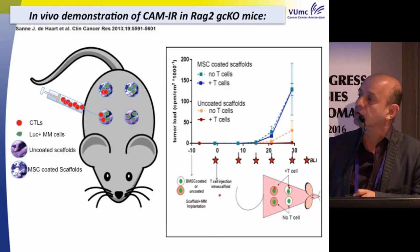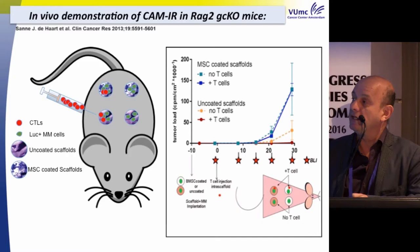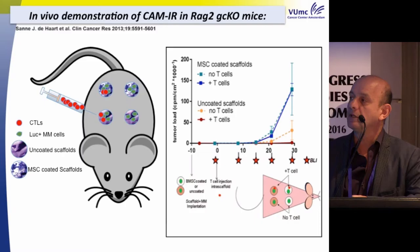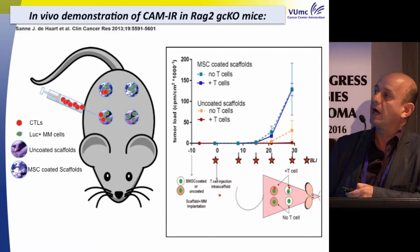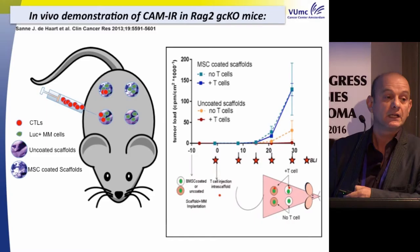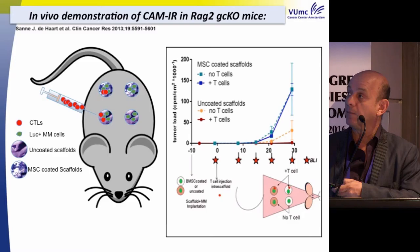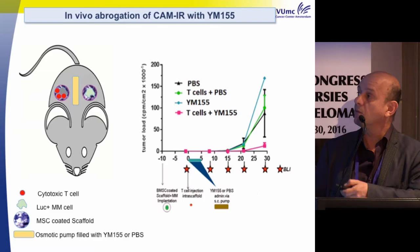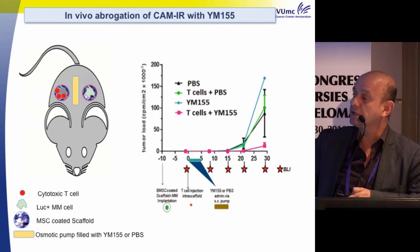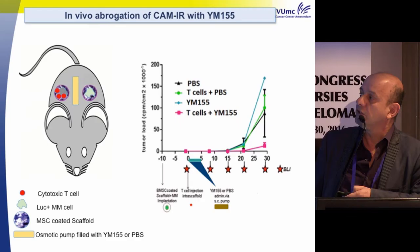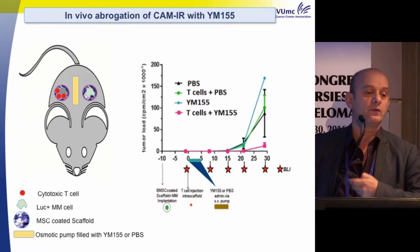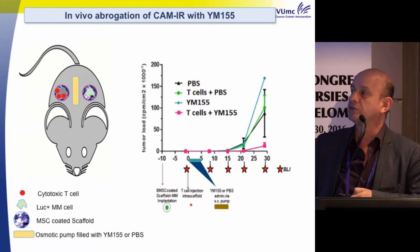We proved this immune resistance in vivo in a mouse model using scaffolds loaded or unloaded with mesenchymal stromal cells. MSC-coated scaffolds inhibit T-cell activity, but without scaffolds the T-cells eradicate myeloma. In this in vivo model, YM155 alone does little, T-cells alone do a little, but the combination effectively eliminates myeloma — proving that combination of T-cells and YM155 overcomes microenvironment-induced immune resistance.